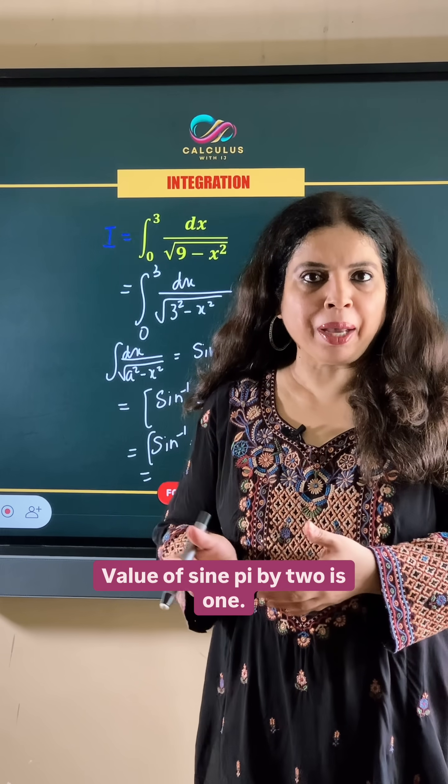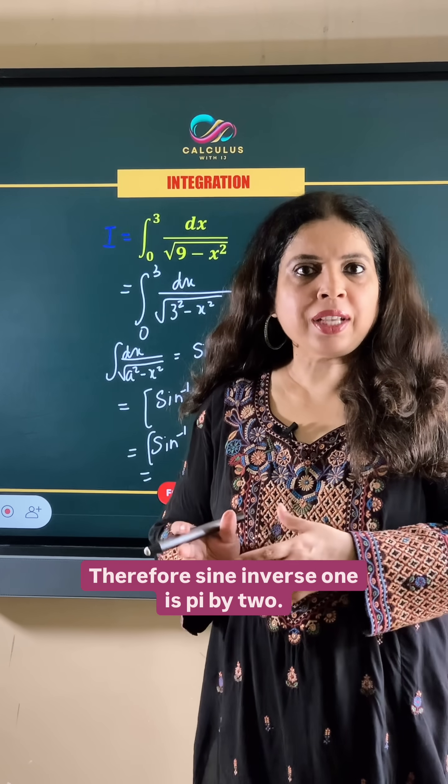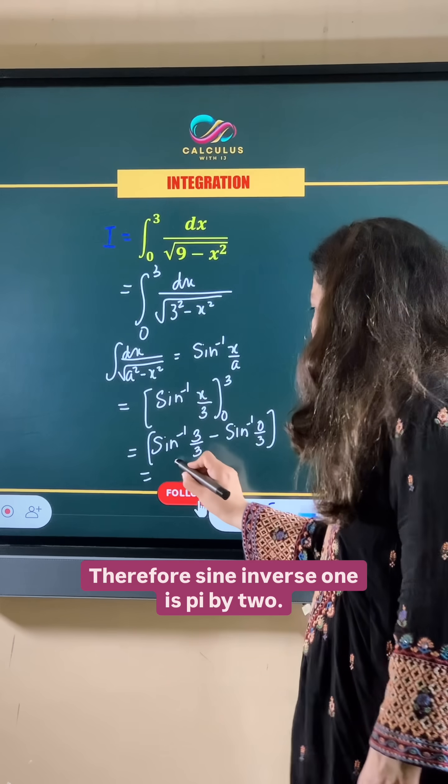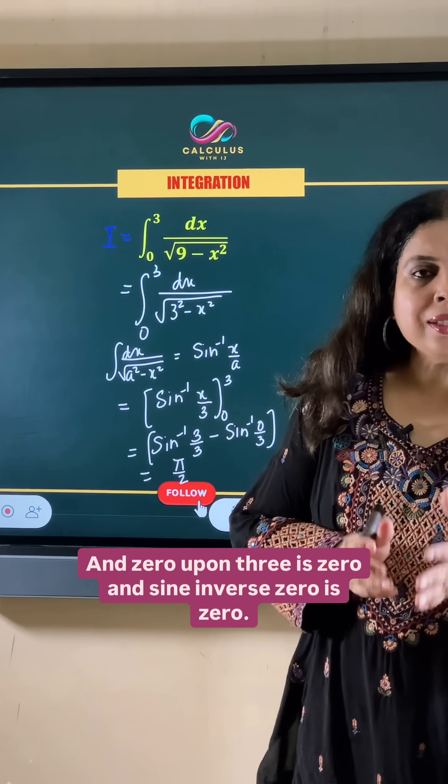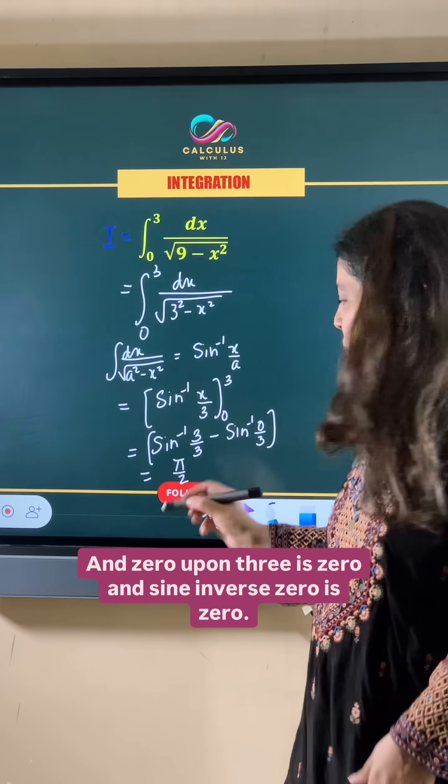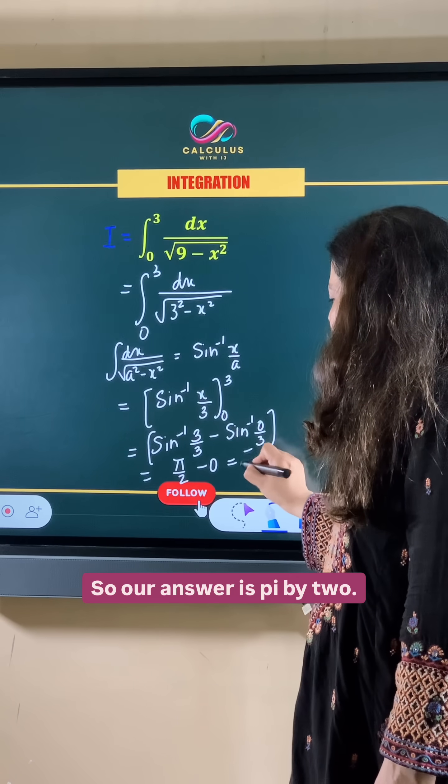Value of sine pi by 2 is 1. Therefore sine inverse 1 is pi by 2. And 0 upon 3 is 0. And sine inverse 0 is 0. So our answer is pi by 2.